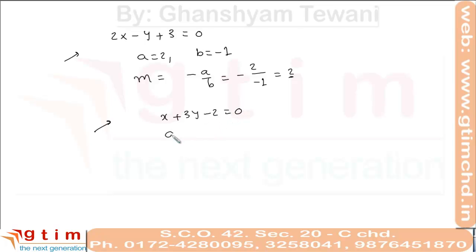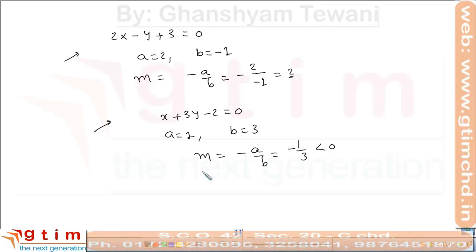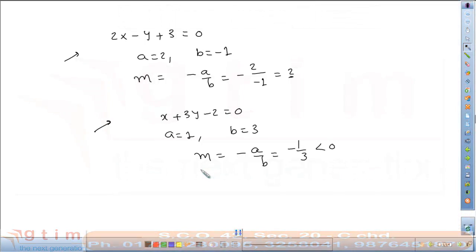For another example, if a = 1 and b = 3, then slope equals minus a upon b, that is minus 1 upon 3. This value is negative, so the line makes an obtuse angle with the positive direction of the x-axis.